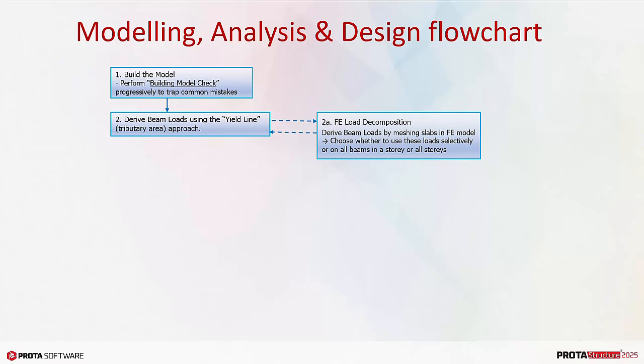FE load decomposition is the alternative method to yield line slab load calculation. This method derives the beam loads by meshing the slabs in the FE model. This method is able to capture the localized effect of slab openings and concentrated slab loads, such as slab line loads. You can then choose whether to use this method on selected or all beams in selected stories, or for the whole model.